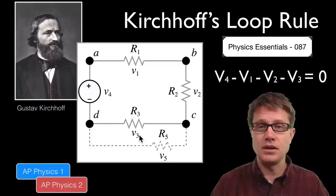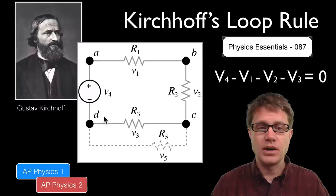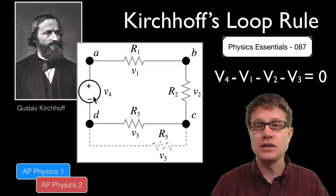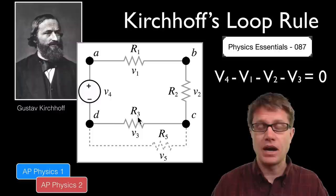How does that work? The battery is a voltage lift — it is giving charge potential energy. And then we are losing that energy through each resistor. The sum of all of the voltage differences is zero: the lift minus the drop minus the drop minus the drop is equal to zero.